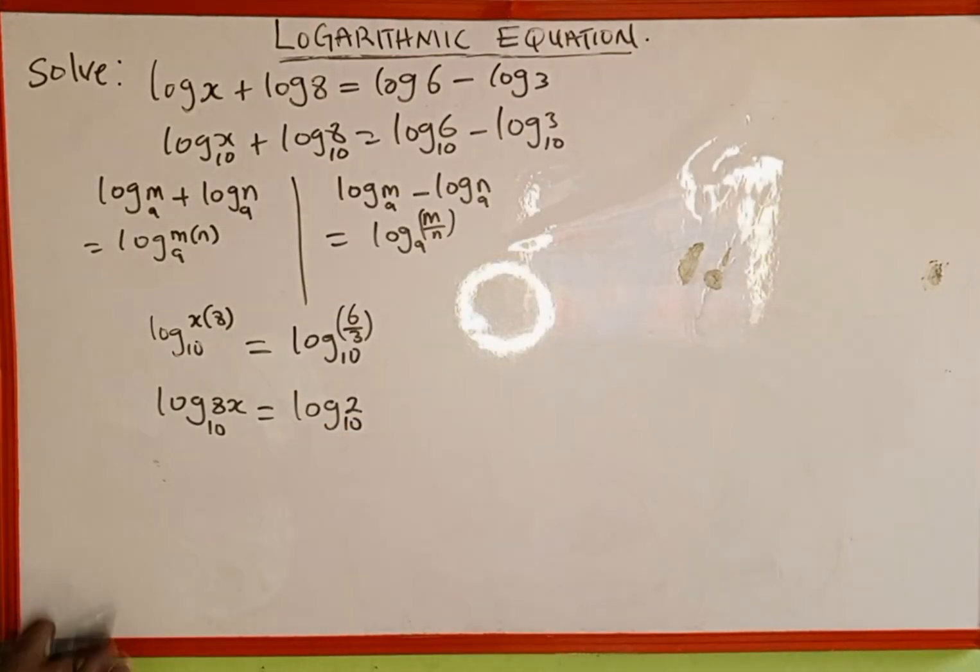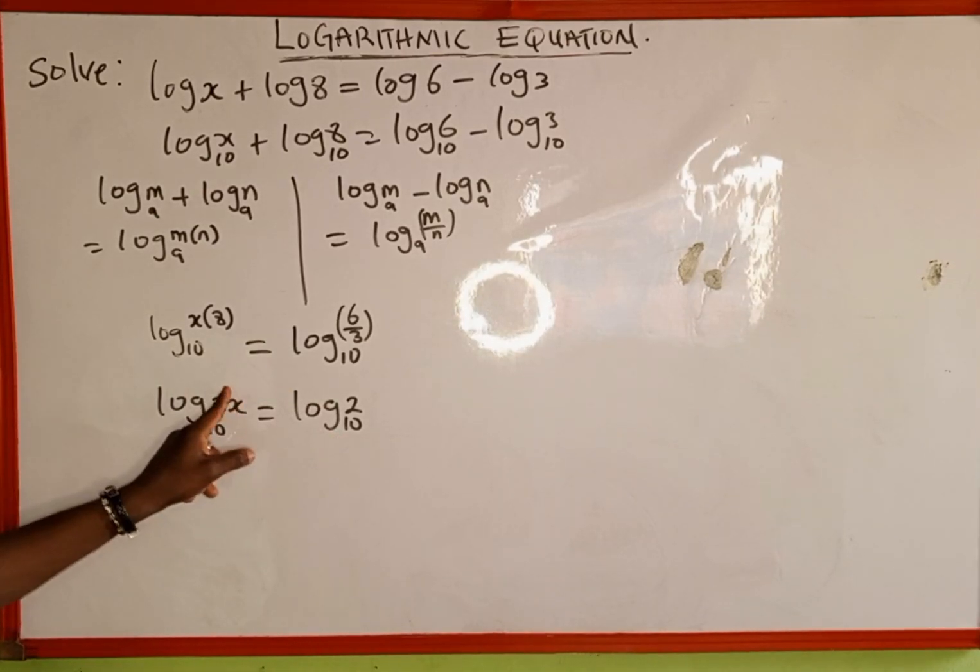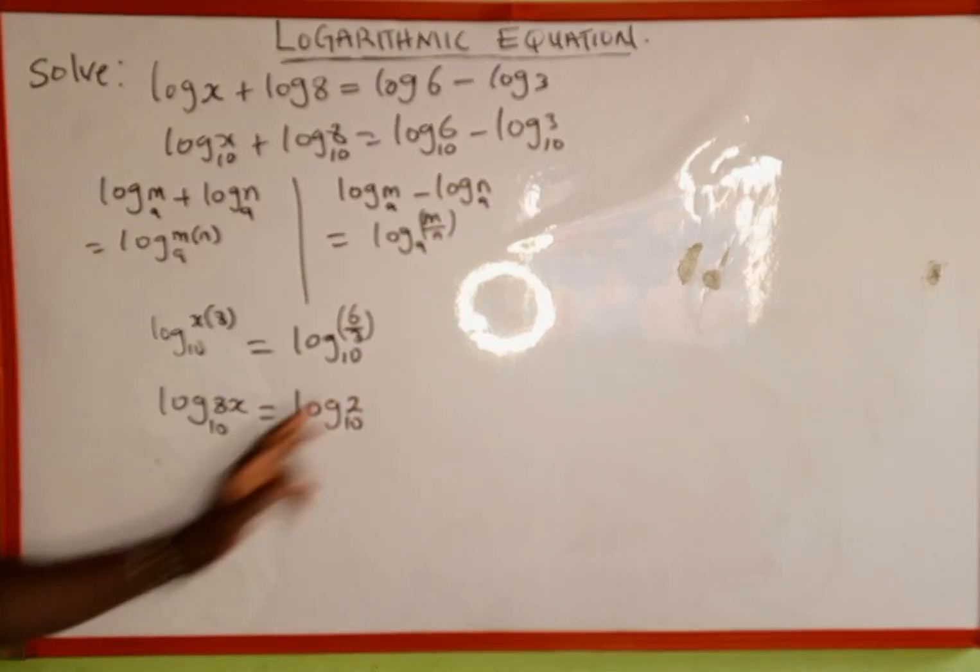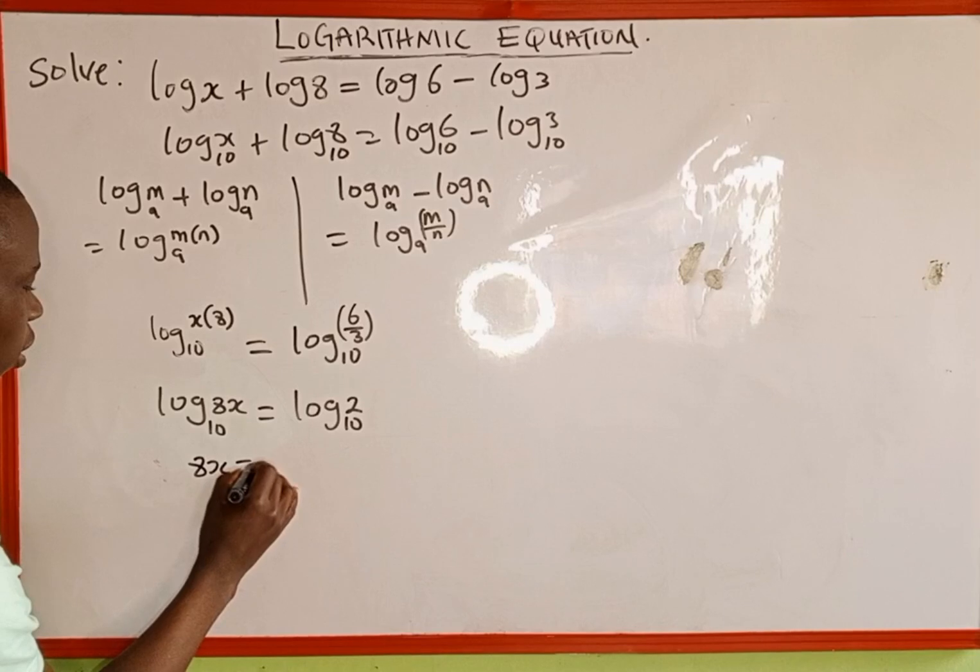So the next thing we are going to recall is another property of logarithm. This is log to base 10, log to base 10. They are the same. That means these two numbers are also the same. Then we equate the two numbers and solve for the value of x. So 8x now will be equal to 2.